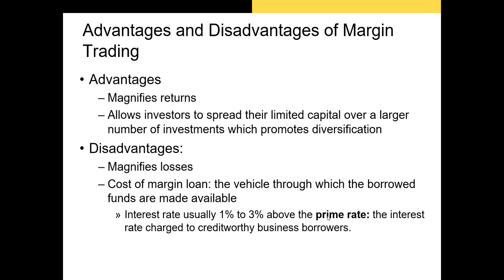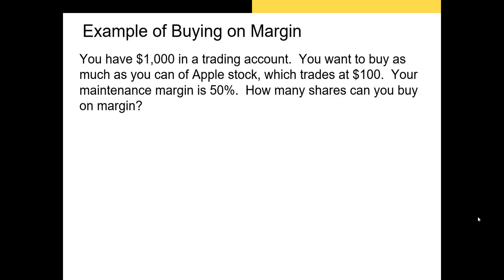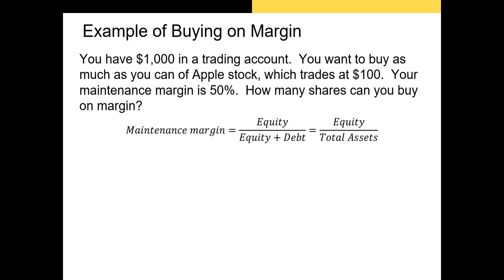Here's an example: you have $1,000 in a brokerage account and want to buy as much Apple stock as possible, which trades at $100 per share, with a maintenance margin of 50%. Starting with the margin formula — if maintenance margin is 50%, half the portfolio value equals your equity of $1,000. Solving for total assets, your total portfolio value is $2,000 — meaning you have $1,000 of your own equity and borrowed $1,000 from your broker.